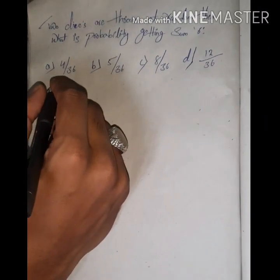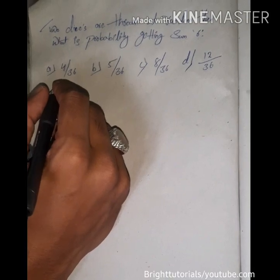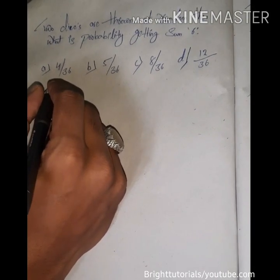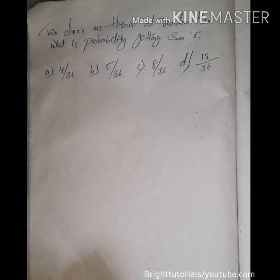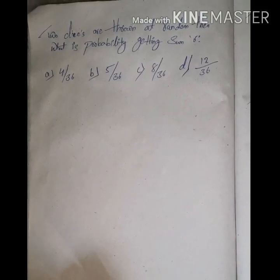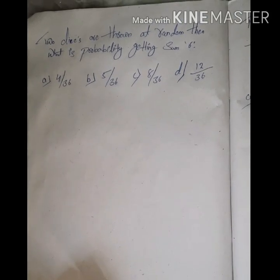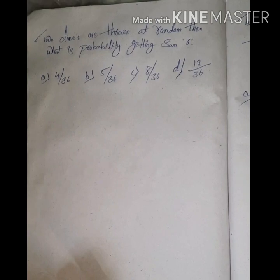Hello everyone, welcome back to my YouTube channel. In this video I am going to show you some tricks for MSET 2020, starting with the probability chapter. Question one: two dice are thrown at random, then what is the probability of getting a sum of six? Option A is 4/36, option B is 5/36, option C is 8/36, and option D is 12/36.